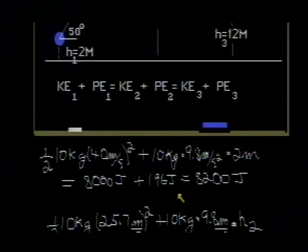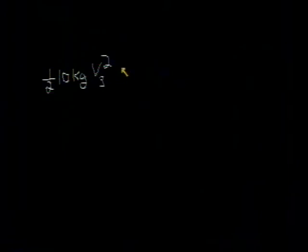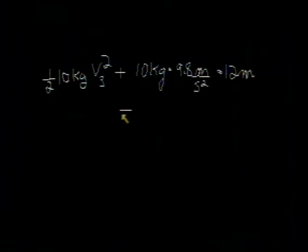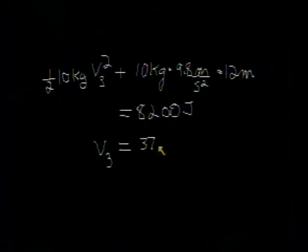Now we do the same at point 3: the kinetic energy plus potential energy at point 3 also equals 8,200 joules. One-half times 10 kilograms times v3 squared, plus 10 kilograms times 9.8 meters per second squared times h3, which was 12 meters, must equal 8,200 joules. Solving for v3 — and you should check this solution — v3 turns out to be 37.5 meters per second.